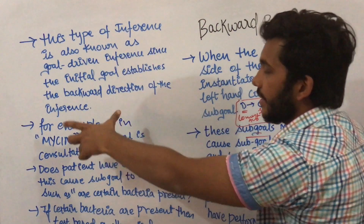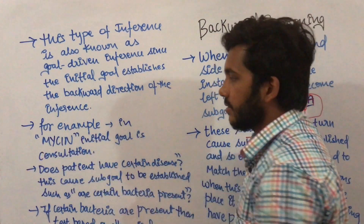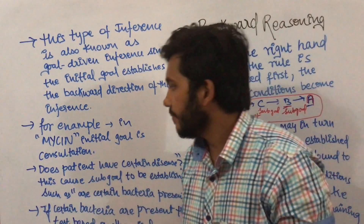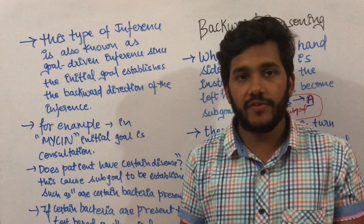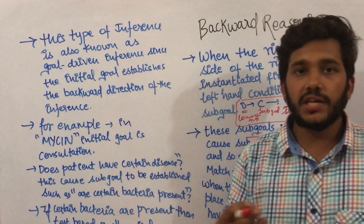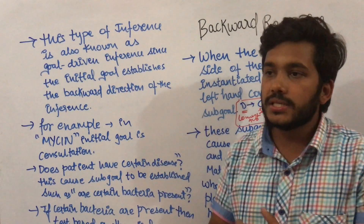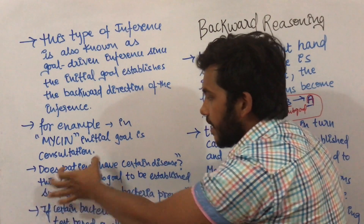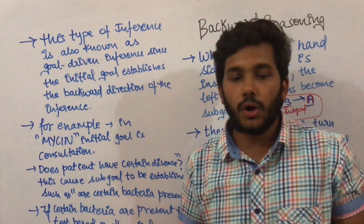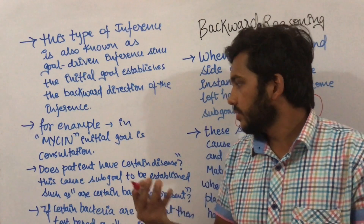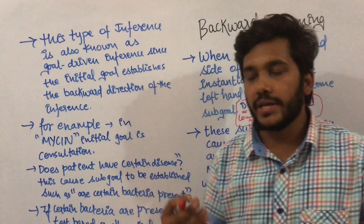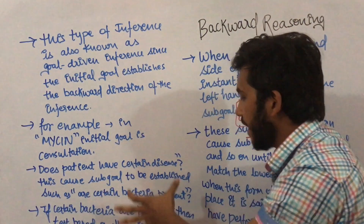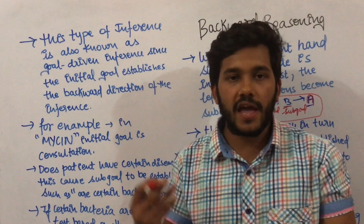Let's understand this with the help of an example in MYCIN. MYCIN is a name of a disease system — suppose any patient is having a disease called MYCIN. The initiated goal is consultation. If you are having MYCIN, you will begin by consulting a doctor. Now the doctor will check what certain diseases the patient is having, and based on those diseases this causes the sub-goal of determining what certain bacteria are present.